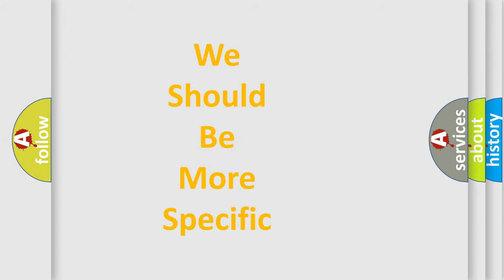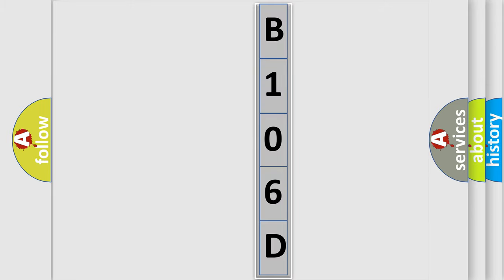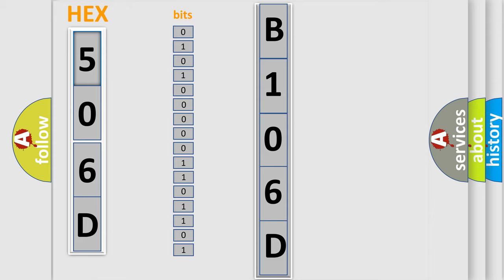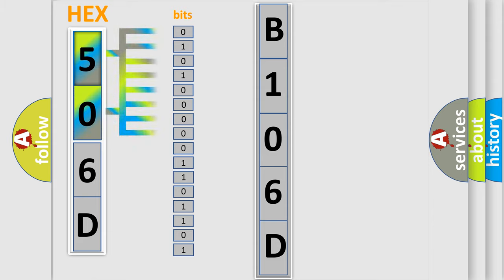The following demonstration will help you look into the world of software for car control units. The error code is split into two bytes consisting of 16 bits. One bit is the basic unit that each computer works with.